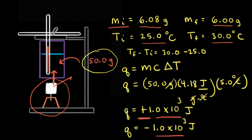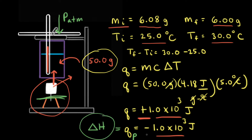Since the soda can is open to the atmospheric pressure of the environment, this soda can calorimeter is an example of constant pressure calorimetry. Since this is the heat transferred under constant pressure, we write Qp, which by definition is equal to the change in enthalpy, ΔH. Because burning the marshmallow gave off energy, this is an exothermic reaction, and therefore the sign for ΔH is negative.